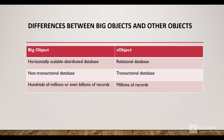Another property of non-relational databases is that they are non-transactional, whereas relational databases are transactional. Relational databases follow the ACID properties — Atomicity, Consistency, Isolation, and Durability. That property is not followed by big objects. When you have millions or billions of records, you'll need to use big objects.